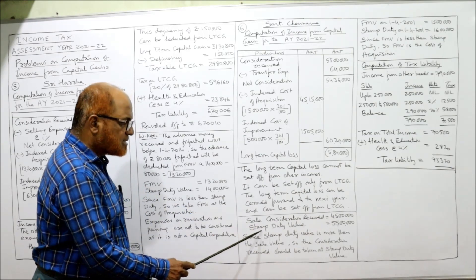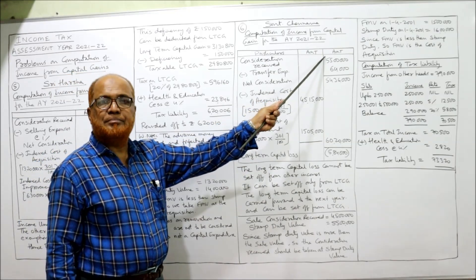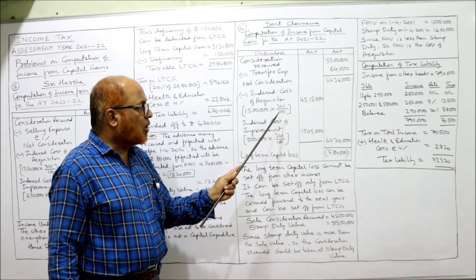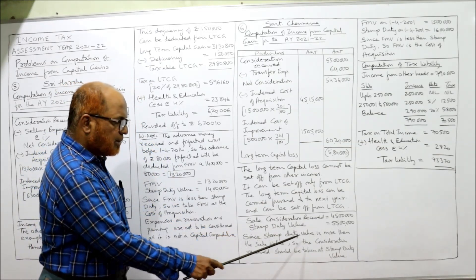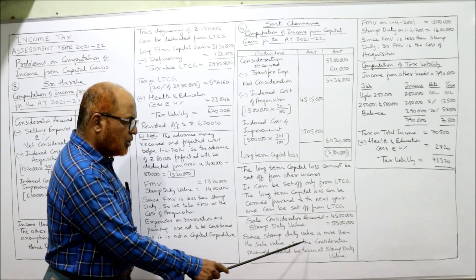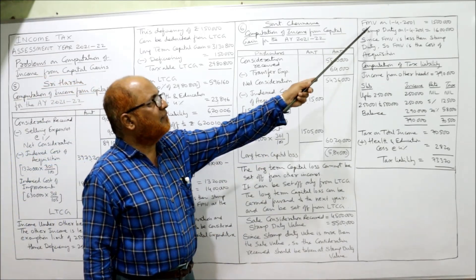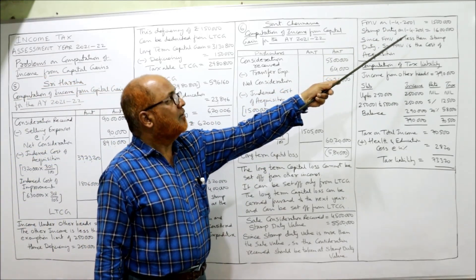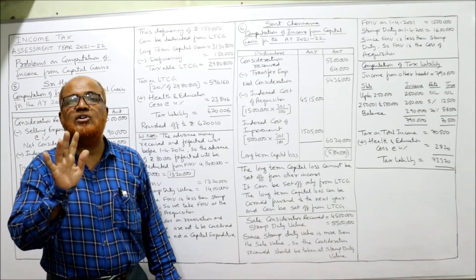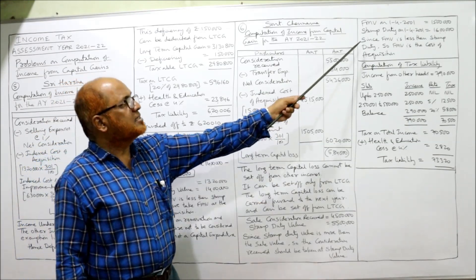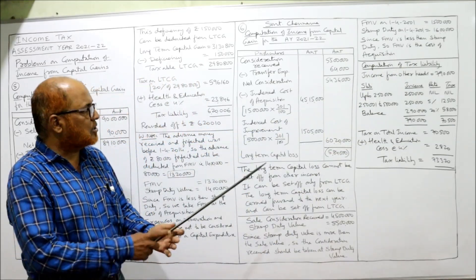Sale consideration received is Rs. 45 lakh whereas stamp duty value is Rs. 55 lakh. Whichever is higher should be taken as consideration — so we take Rs. 55 lakh. For cost of acquisition, we should take the lower. FMV on 1-4-2001 is Rs. 15 lakh whereas stamp duty value on 1-4-2001 is Rs. 16 lakh. Since FMV is less than stamp duty value, FMV of Rs. 15 lakh is the cost of acquisition.